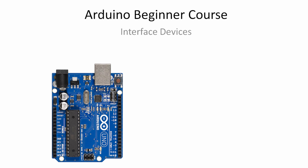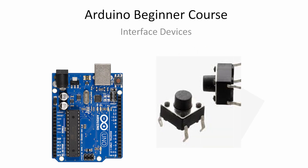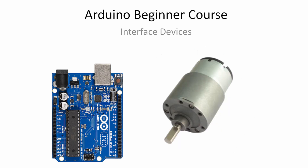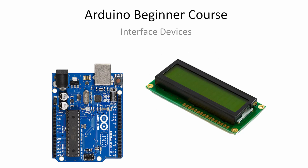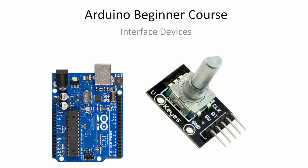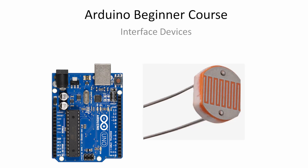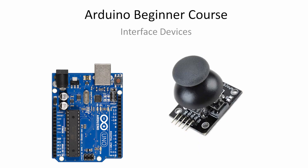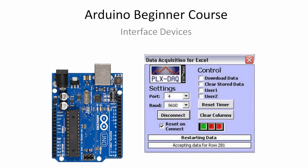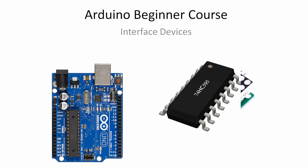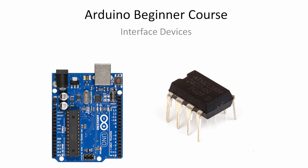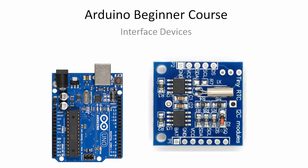Some of the interface devices we are going to use in this course for interfacing with the Arduino UNO development board are: LEDs, push buttons, IR sensor, relays, DC motor, 7-segment displays, liquid crystal displays, keypads, encoders, potentiometer, LDR (light dependent resistor), 3-dimensional accelerometer, joystick module, HC-05 Bluetooth module, XLC data logger, shift register, dot matrix display, 24C04 EEPROM, and RTC IC DS1307.